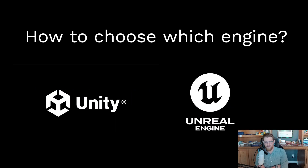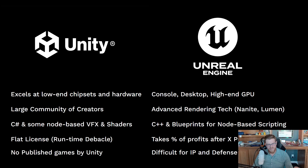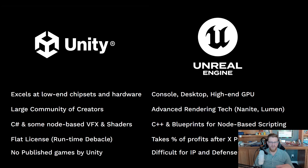Looking specifically at Unity and Unreal, which to me are the two main frontrunners in the game engine world, let's look at the pros and cons of each. Unity really excels at low-end chipsets and hardware. They have a large community of creators, so there's a ton of data and forums out there. It's also an engine using C#, so it's typically a little bit easier to get up to speed on, and I've found a more robust talent pool using C# rather than other languages. There's also a little bit of node-based VFX and shader work, though node-based is not Unity's core feature.